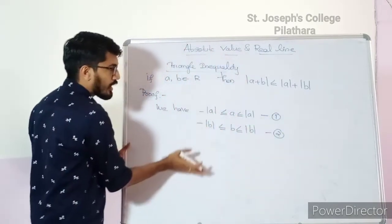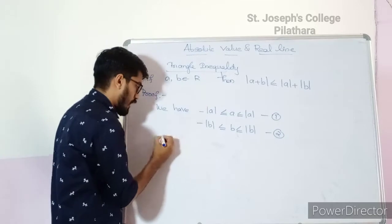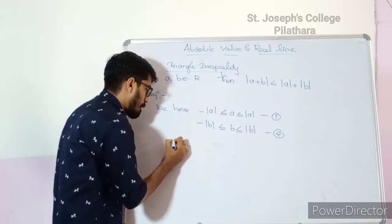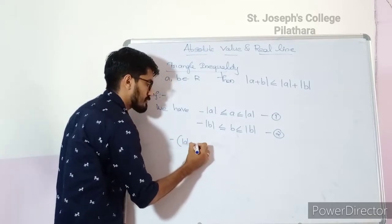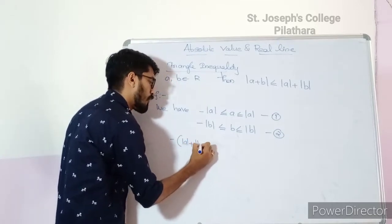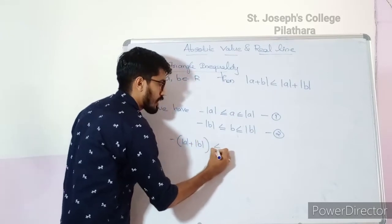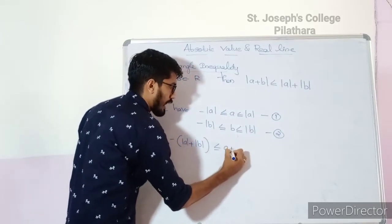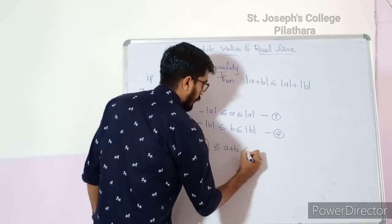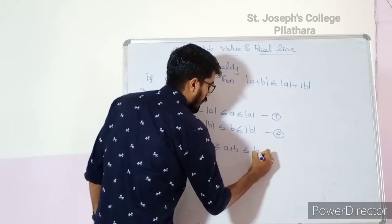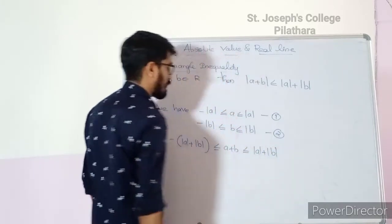Adding these two inequalities, we get −(|a| + |b|) ≤ a + b ≤ |a| + |b|.